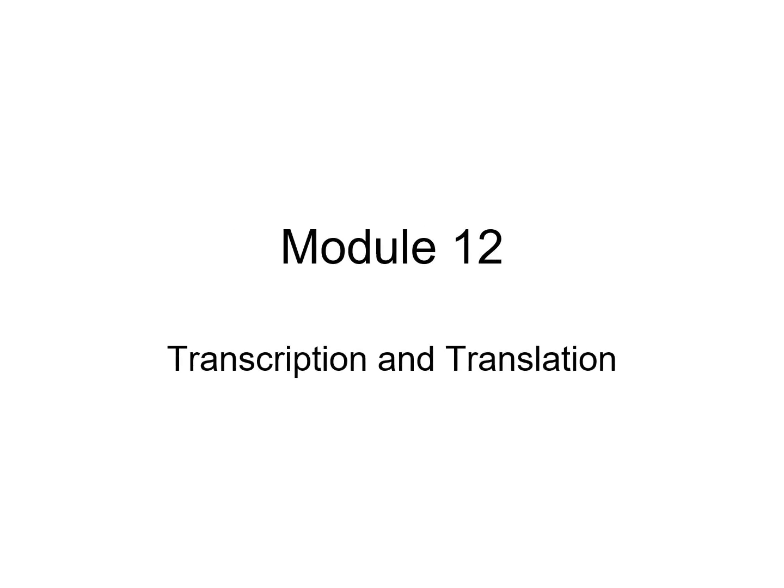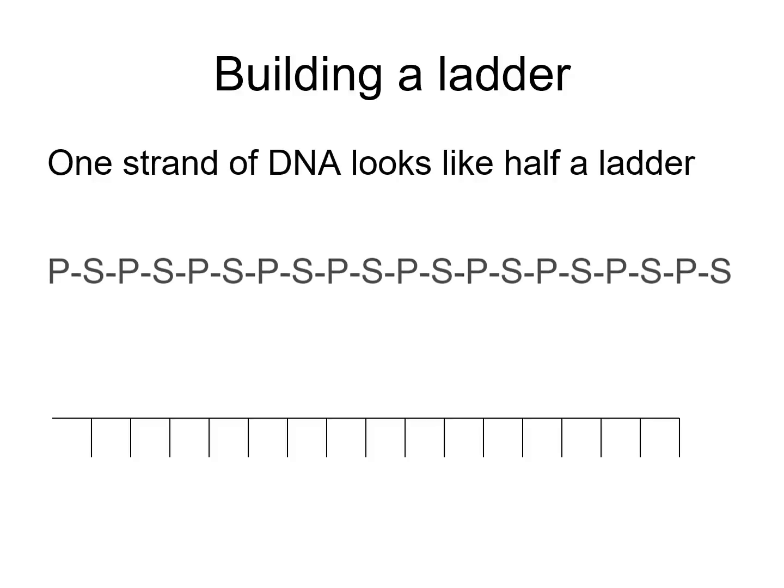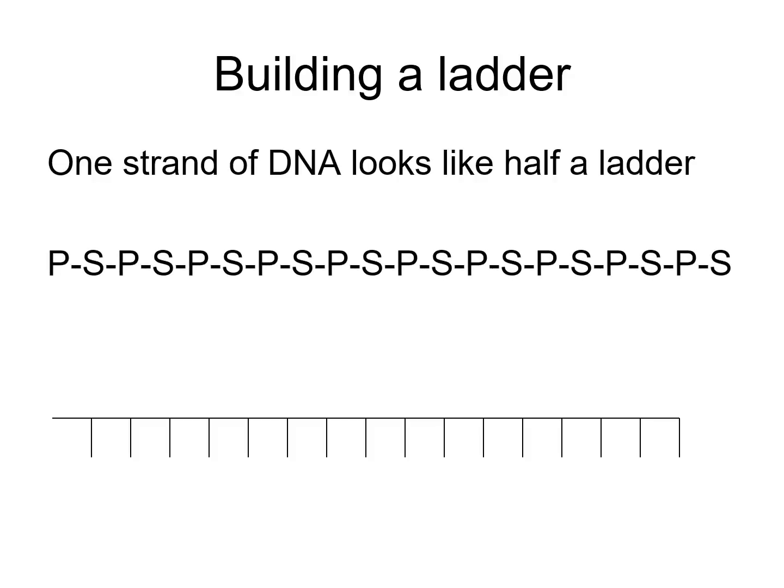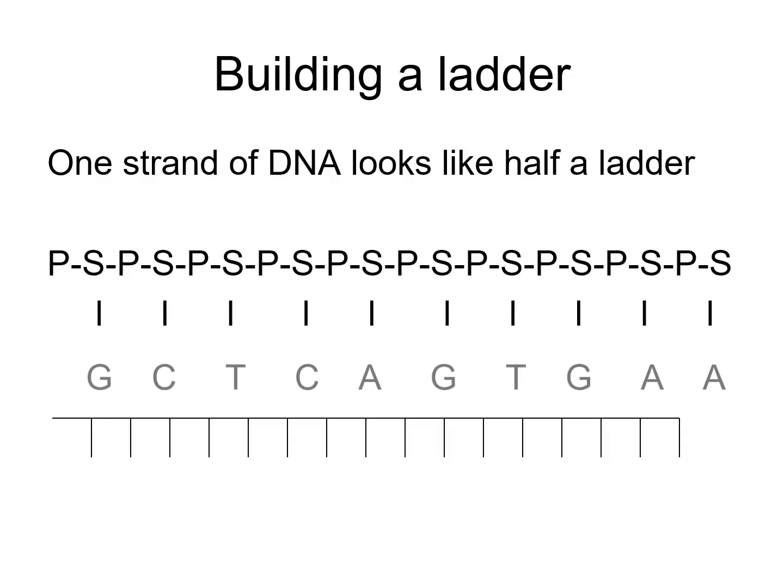How does the double-stranded DNA zip together? The P's and S's represent the phosphate-sugar backbone of DNA, with nitrogen bases (G, C, T, A) branching off — remember, uracil is not used in DNA. This represents one half of the ladder of double-stranded DNA. To make a full ladder, you would add a complementary base on the other strand.